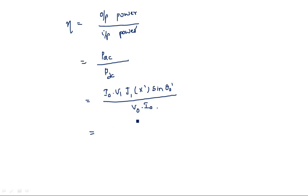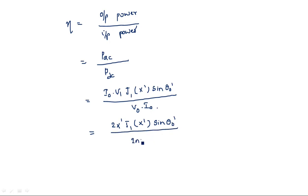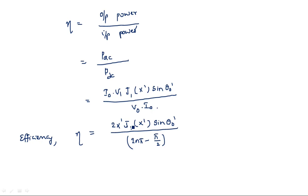Substituting V1 from that expression, the efficiency becomes: η = output power / input power = (I0 · V1 · J1(x') · sin(θ0')) / (V0 · I0). Substituting V1/V0 = 2x' / (2nπ − π/2), the expression for efficiency is: η = 2x' · J1(x') · sin(θ0') / (2nπ − π/2).